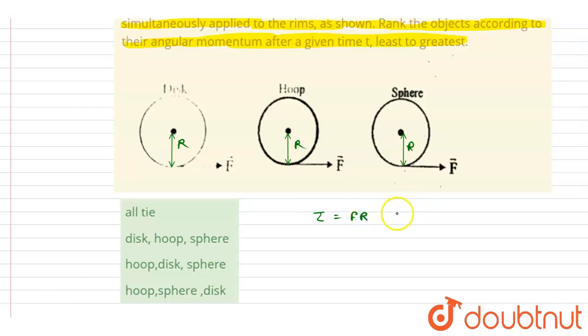F into r. So the torque is F into r, and it is acting for a given time t. We know that the torque is nothing but the rate of change of angular momentum, and